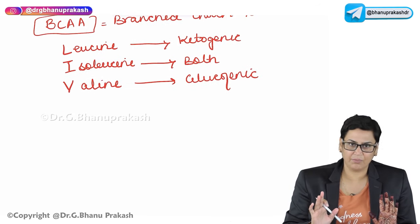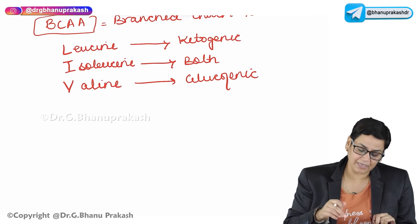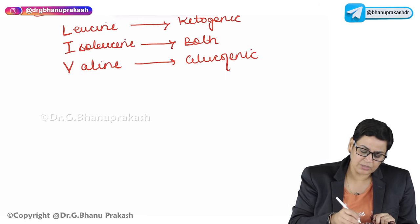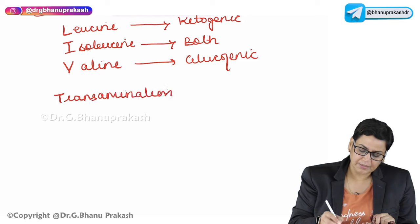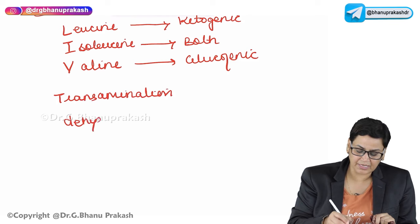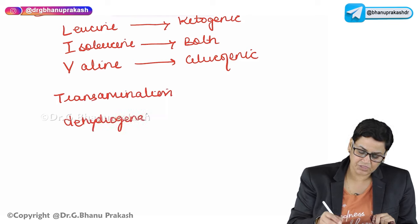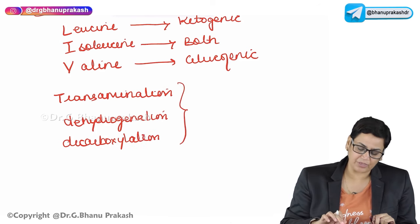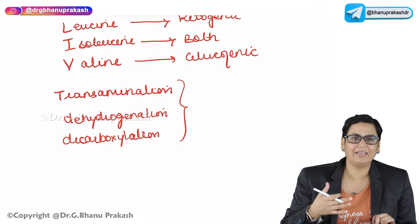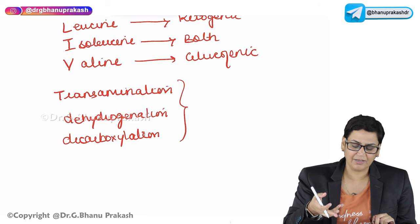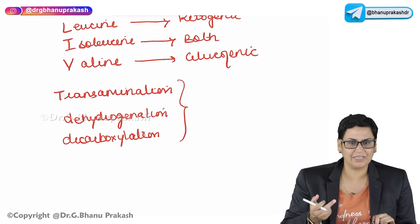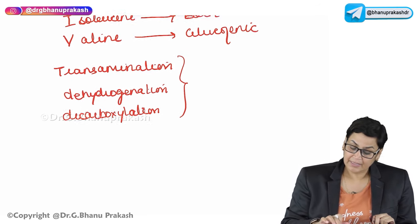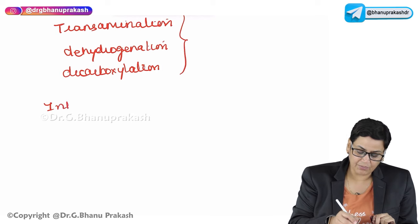If you look at the metabolism of BCAAs, there are two similar reactions: transamination, leading to dehydrogenation, and then decarboxylation. After undergoing these three important reactions, the fate of leucine, isoleucine, and valine is determined. As mentioned, isoleucine is both glucogenic and ketogenic, while valine is strictly a glucogenic amino acid.